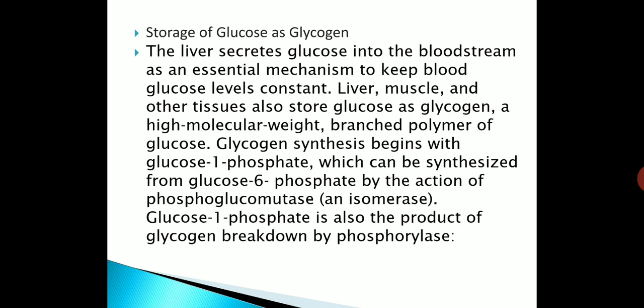Glycogen synthesis begins with glucose 1-phosphate, which can be synthesized from glucose 6-phosphate by the action of phosphoglucomutase and isomerase. Glucose 1-phosphate is also the product of glycogen breakdown by phosphorylase.